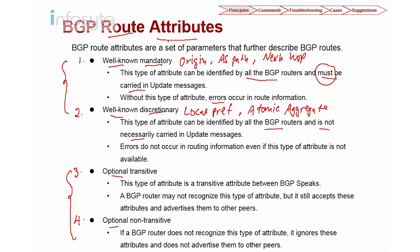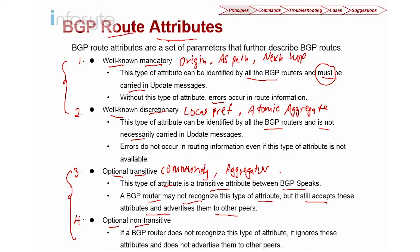Optional attributes have two subcategories: transitive and non-transitive. Optional transitive means the attribute is transitive between BGP speakers. Optional means not all BGP routers support it — some attributes are private and may not be supported. Transitive means that even if a router does not recognize this attribute type, it will accept and propagate it to other peers. Examples of optional transitive include community and aggregator.